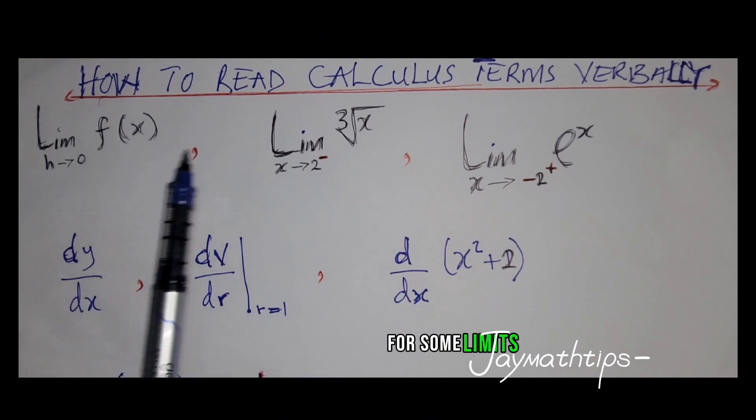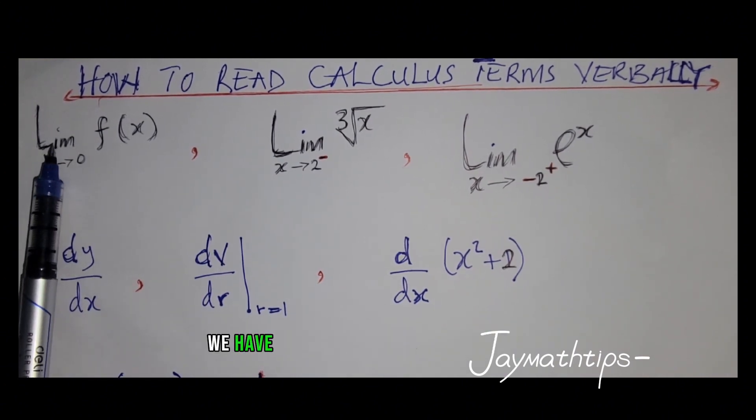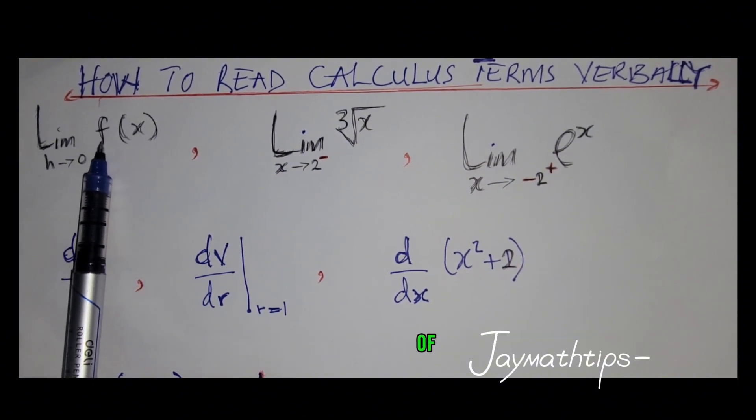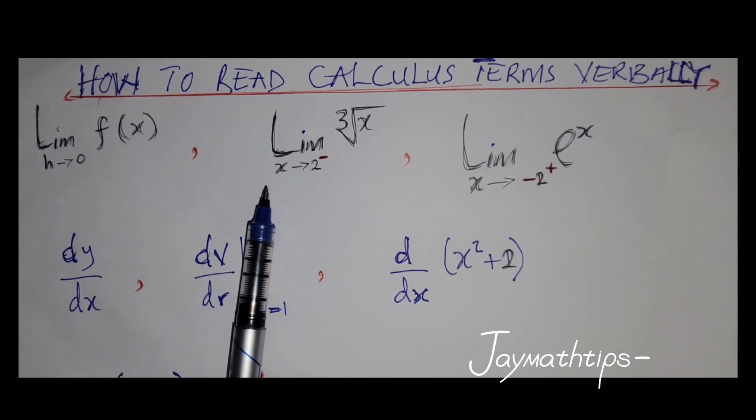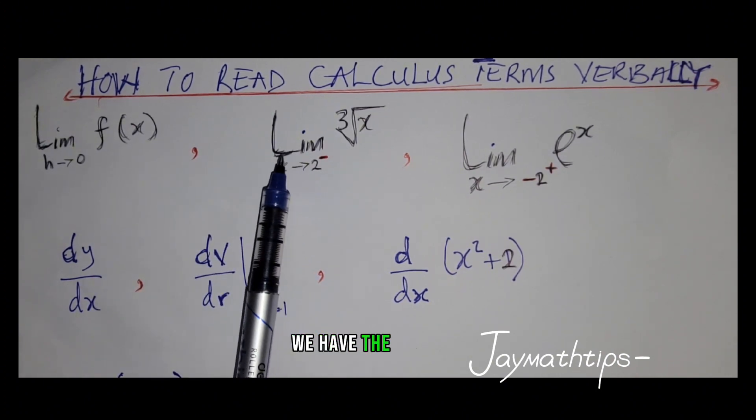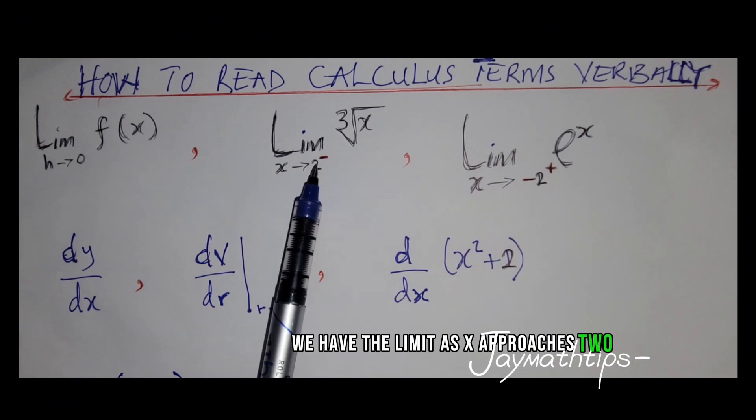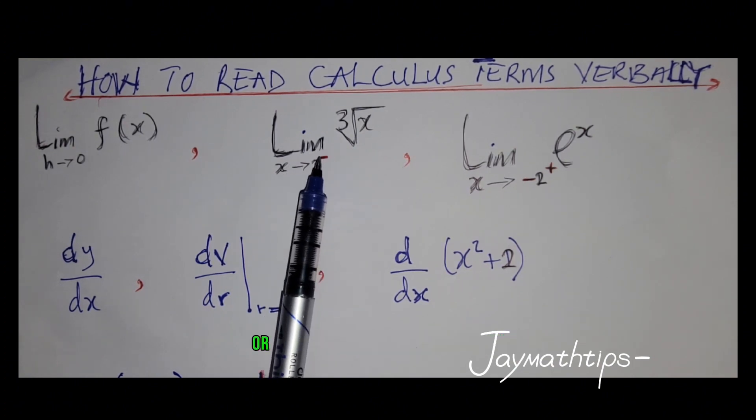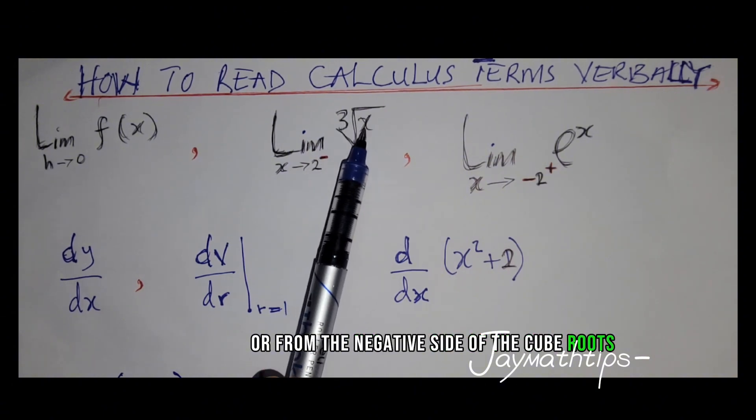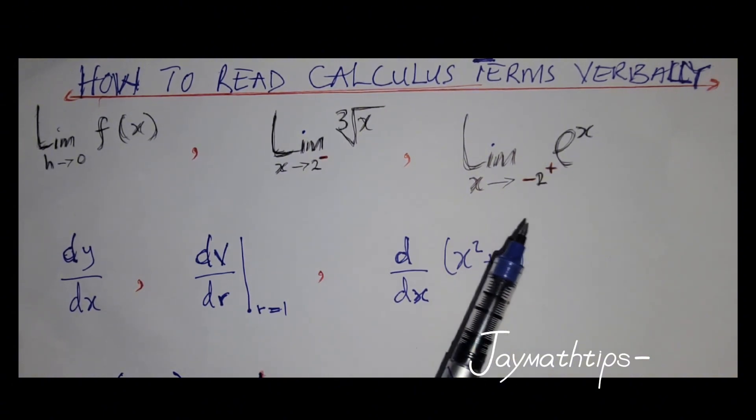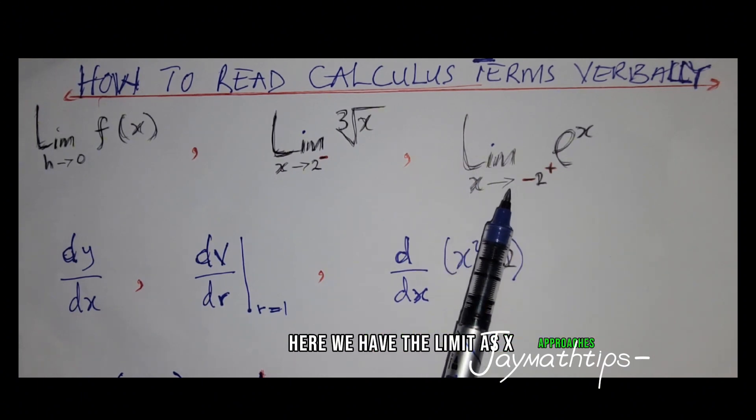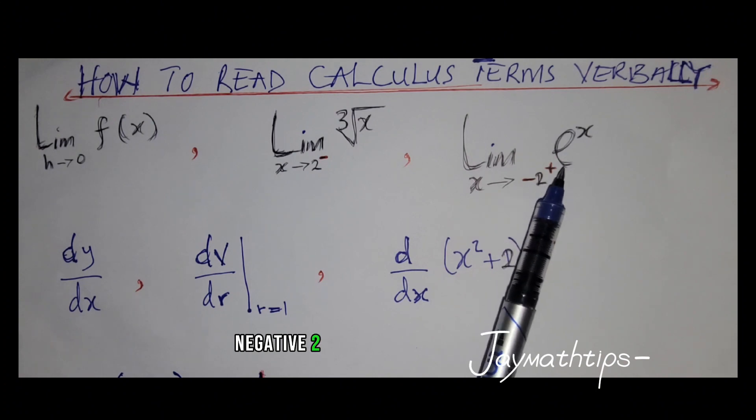For some limits we have: the limit as h approaches 0 of f of x. Here we have the limit as x approaches 2 from the left, or from the minus, or from the negative side of the cube root of x. Here we have the limit as x approaches negative 2 from the right, or from the more positive numbers, of e to the x.